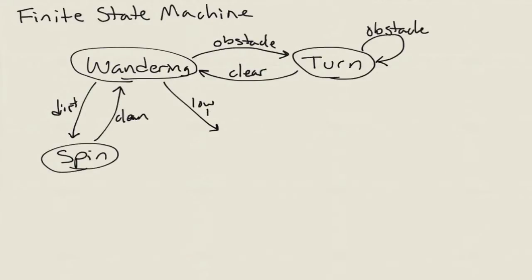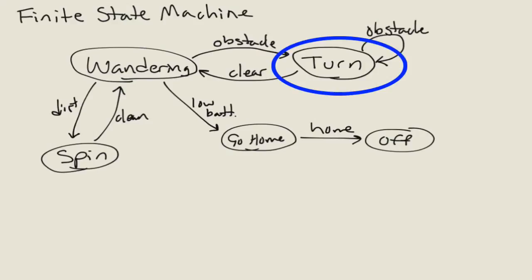Finally, when the battery runs low, it enters a go home state, turning itself off when it arrives home. In a state machine graph, a circle, sometimes labeled, is called a state.